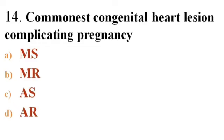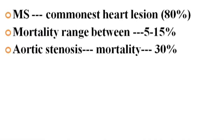Next question: Commonest congenital heart lesion complicating pregnancy. Options: A) Mitral stenosis, B) Mitral regurgitation, C) Aortic stenosis, D) Aortic regurgitation. Answer is A — Mitral stenosis. Mitral stenosis is the commonest heart lesion occurring during pregnancy, at about 80 percent. Mortality during pregnancy ranges between 5 to 15 percent. Mortality due to aortic stenosis is highest during the perinatal period, at about 30 percent. Aortic stenosis is the valvular lesion which can cause death during labor.